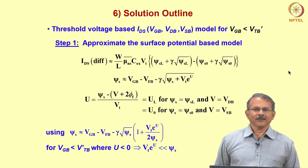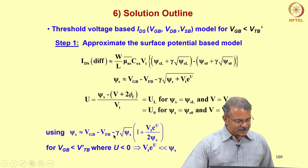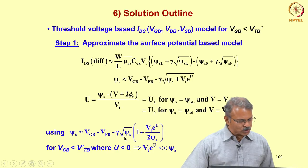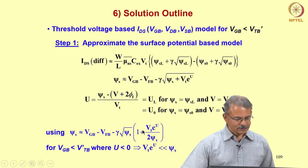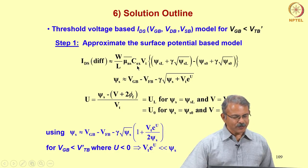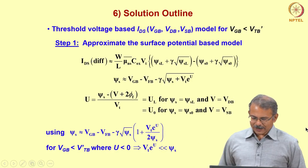Now let us see what approximation we can make. Using ψs = Vgb − Vfb − γ√(ψs) · (1 + Vt·e^(u/2ψs)), we want to approximate this particular term. We want to represent this expression for ψs by an approximation — this is actually very straightforward.